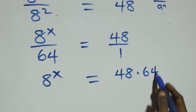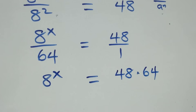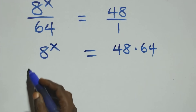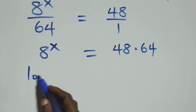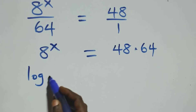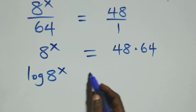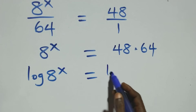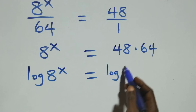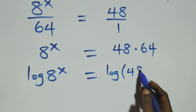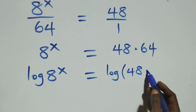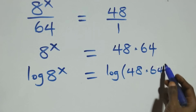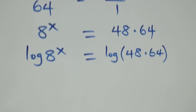In the next step here, take the log on both sides. That is, we have log 8 raised to power x equals log of 48 times 64 on this side.